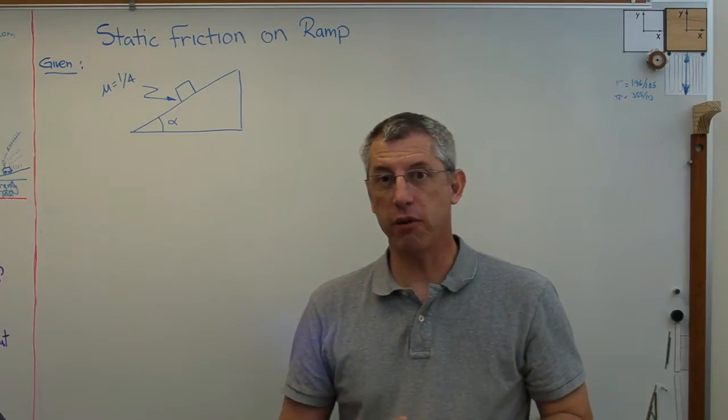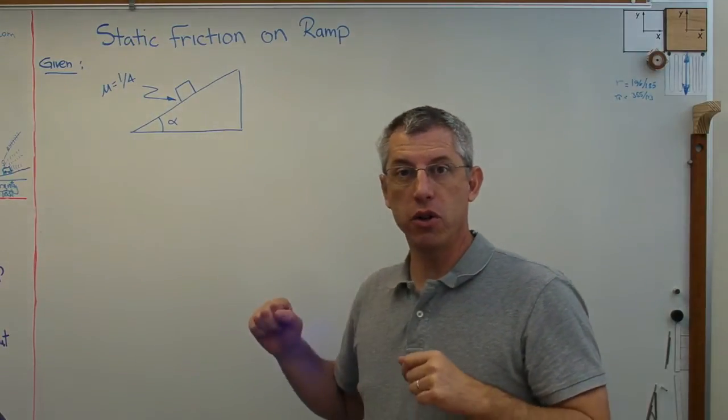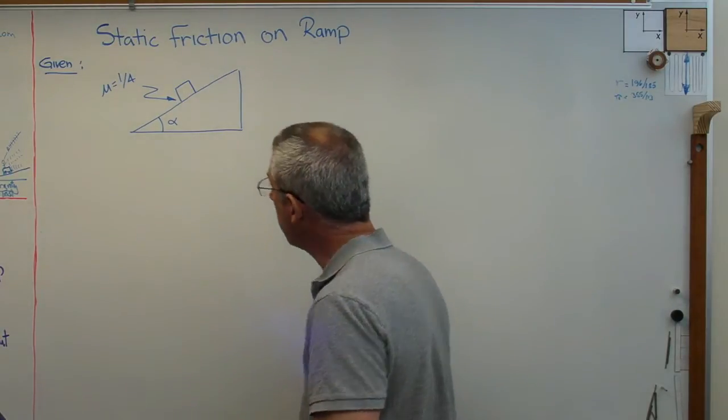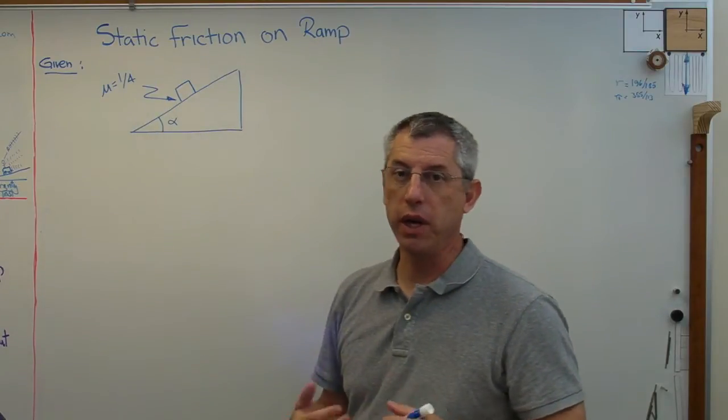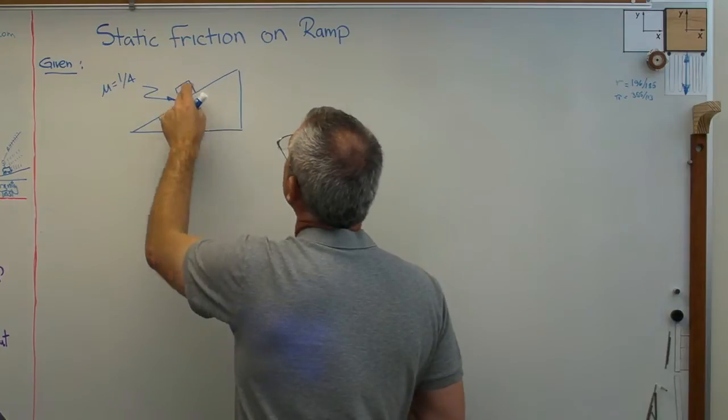We're dealing with static friction today. This is a static problem, so there's no acceleration. What I've got here is a very simple problem. We've got a ramp here, a ramp could be a loading dock or something like that, and I've got a box on it.